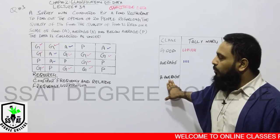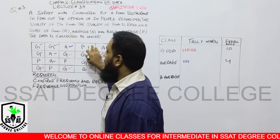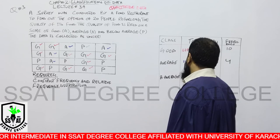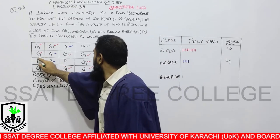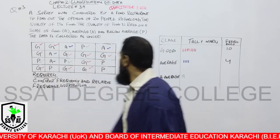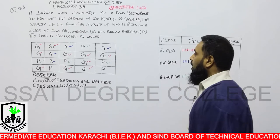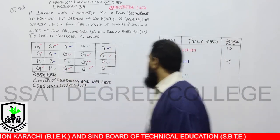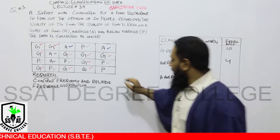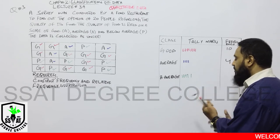پھر below average کی بات کرتے ہیں۔ Below average کے اندر جو تعداد موجود ہے — جسے ہم نے P سے denote کیا تھا — وہ ہے: P نمبر ایک، پھر ایک اور P، پھر ایک اور P، پھر ایک اور P۔ پانچواں P — اسے packet کی صورت دے دی۔ آخر میں ایک اور P — total یہ six marks بن جاتے ہیں۔